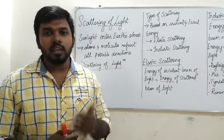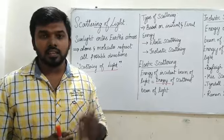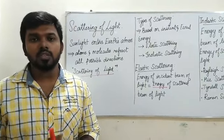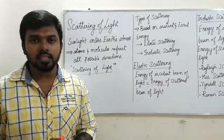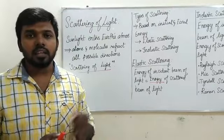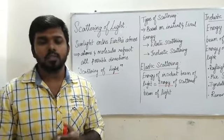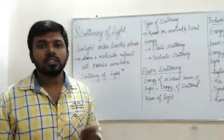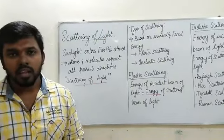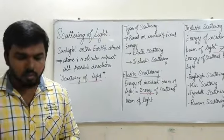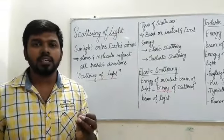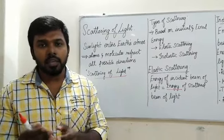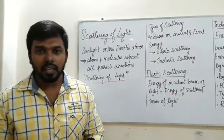When a sunlight beam enters the earth's atmosphere, the atoms and molecules present in different gases redirect the sunlight beam in all possible directions. This is called scattering of light, which means the particle present in the medium redirects the beam in all directions.